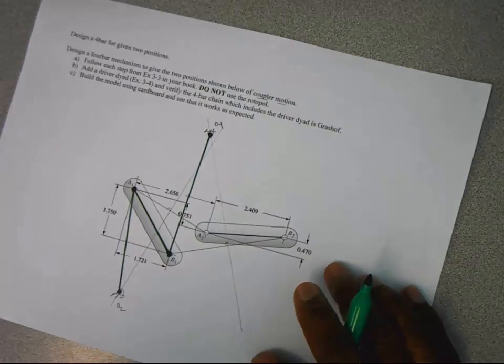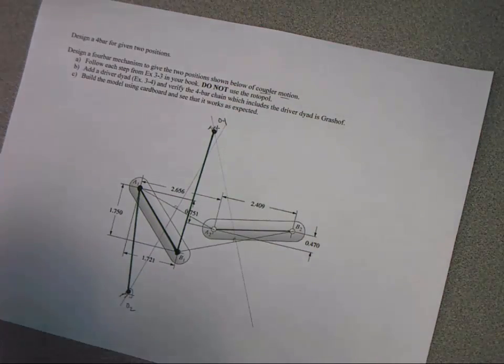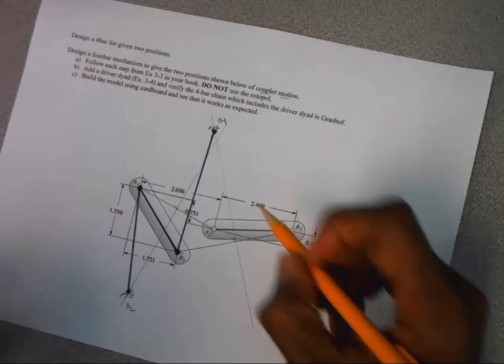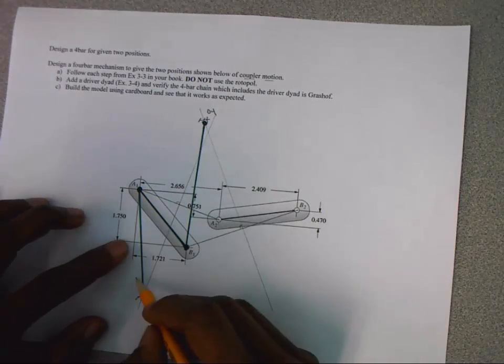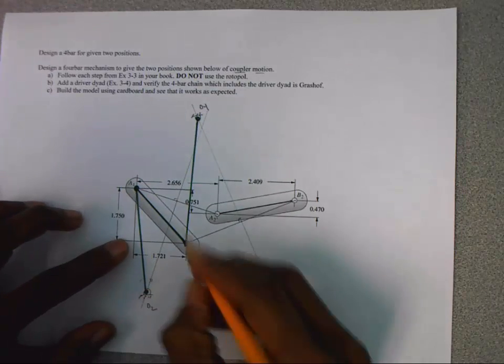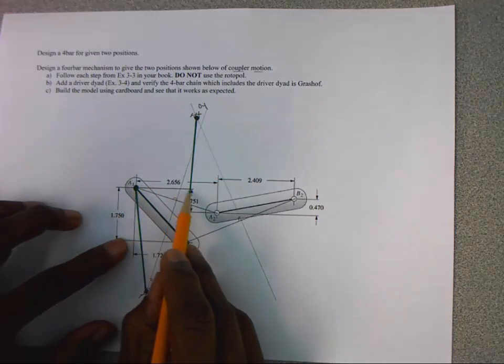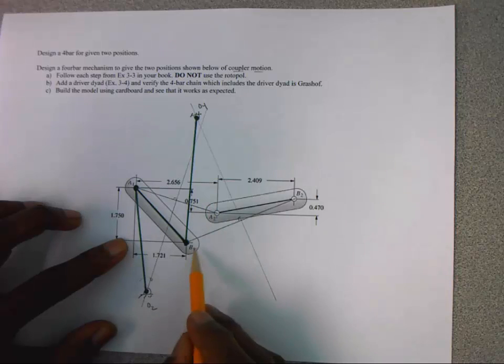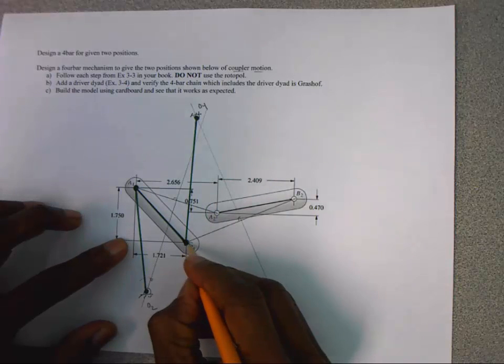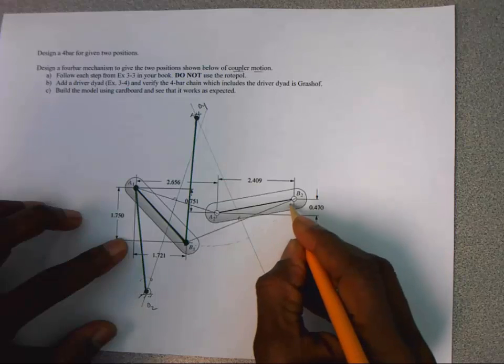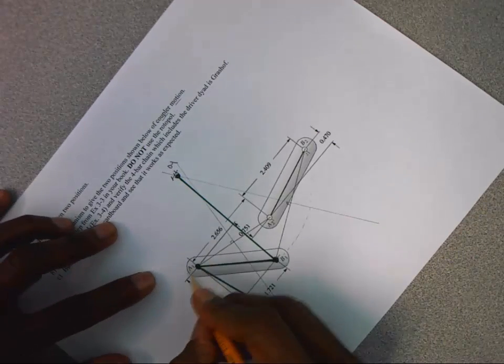Draw that in. So now it's a little easier to see my mechanism. And also to see the kind of motion that's going to occur. So as O2 moves in this direction, we'd expect A1 to follow this path and end up over here at A2.